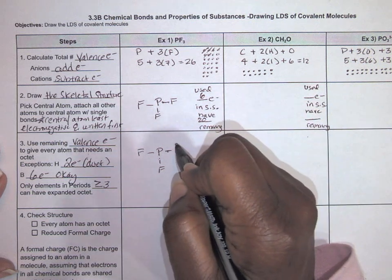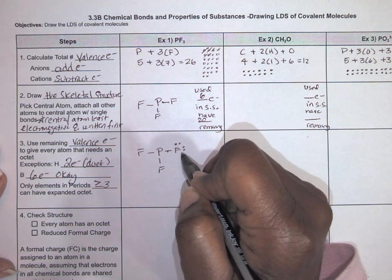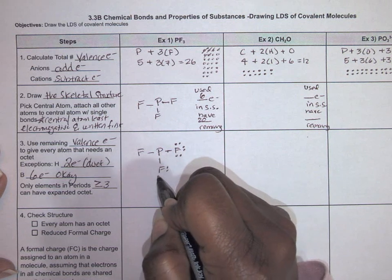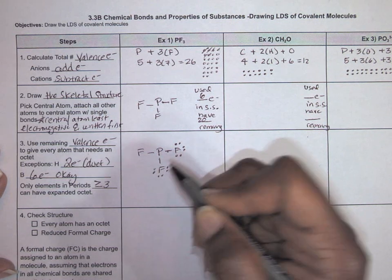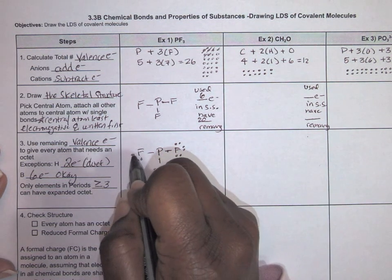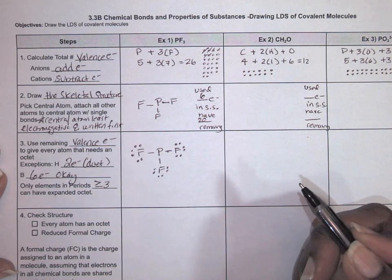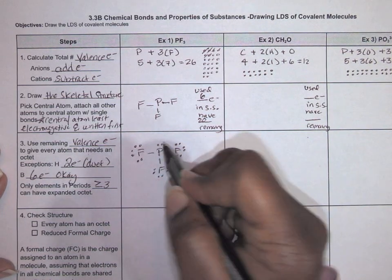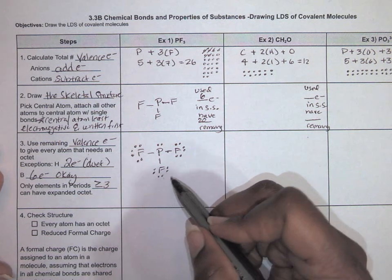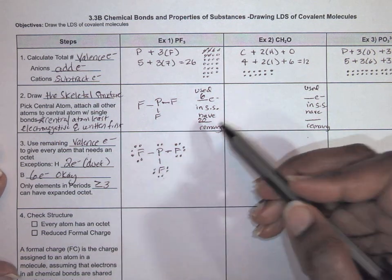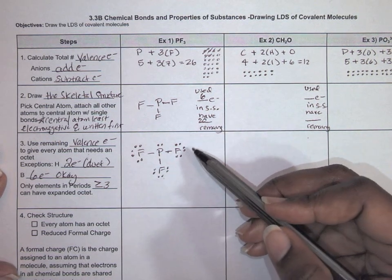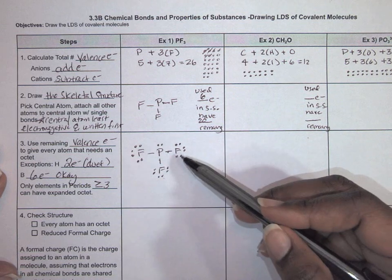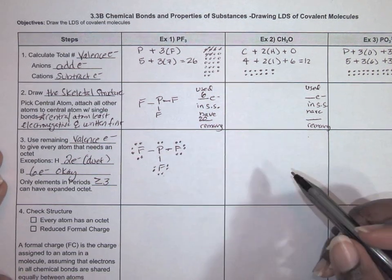We give each fluorine six electrons — totaling 18 electrons used — then give the phosphorus the last two, for a total of 20. These dots placed around the atoms are called lone pairs. I had 20 electrons remaining, and needed exactly 20 electrons to give every atom an octet. That's why this structure has all single bonds.